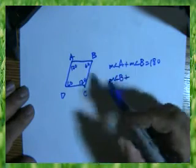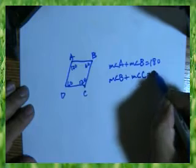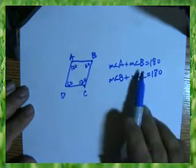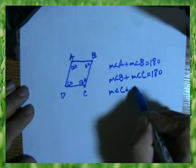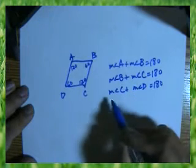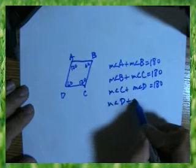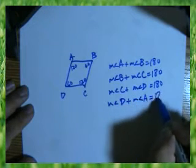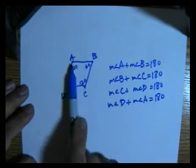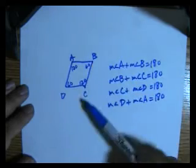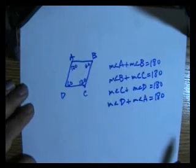And all of these, whether you're given that information or not, should be true in a parallelogram. So angle A and angle B add up to 180. Angle B and angle C add up to 180. Angle C and angle D should add up to 180. And angle D and angle A should add up to 180. This is what is meant by consecutive angles are supplementary. Angle A and angle B are consecutive angles; B with C, C with D, D with A. That's consecutive angles are supplementary.